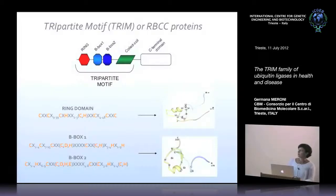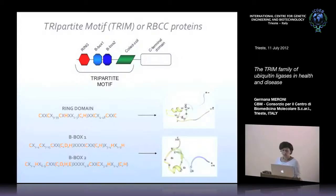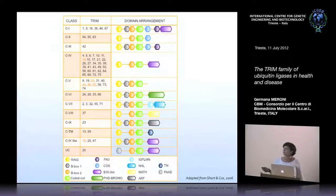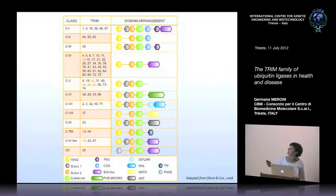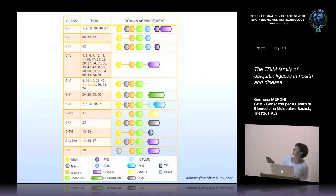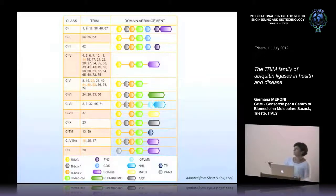Recent structural data show that indeed B-box 1 and B-box 2 also fold in a similar structure as the ring domain. In human, there are now almost 70 proteins sharing the N-terminal tripartite motif, and they are grouped in different classes based on the presence of different C-terminal domains. The order of the domains in the tripartite motif is always conserved.